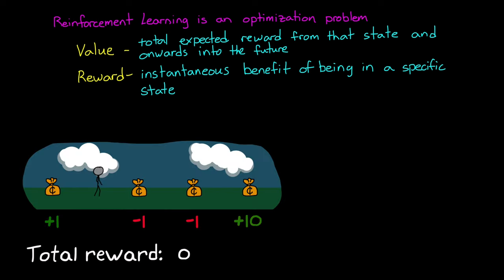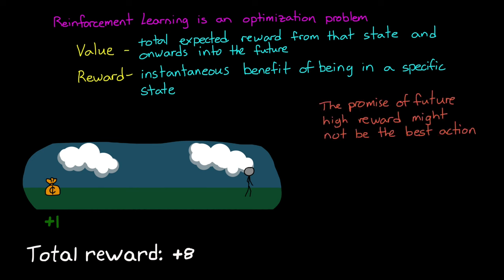For example, imagine our agent is in this situation, and is trying to collect the most reward within three steps. If the agent looks directly at the reward for each action, then it will step left first to get a higher reward, and then right, and then left again to ultimately collect plus one. However, if the agent is able to estimate the value of a state, then it will see that going right has a higher value than going left, and will ultimately end up with plus eight reward.